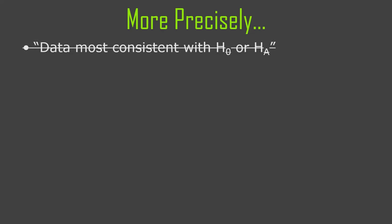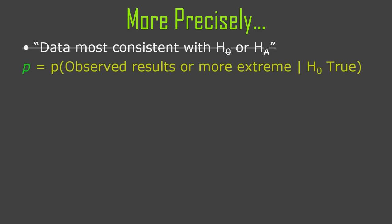Let's get a little more precise. The p-value is the probability of our observed results or results more extreme if the null is true. 'More extreme' means more extreme according to the null — more unlikely if the null hypothesis is true. So how do we calculate p?